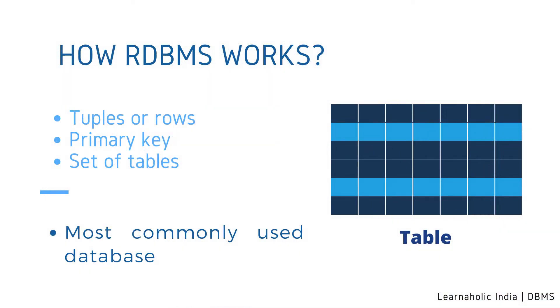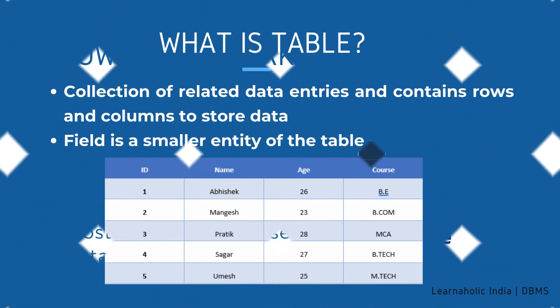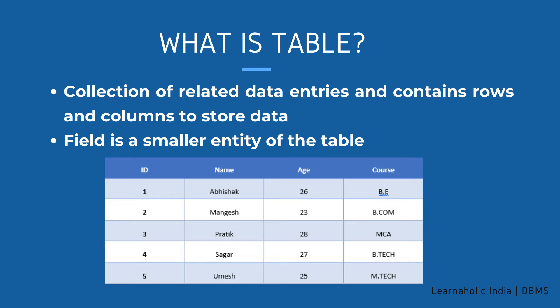Now let's see how RDBMS works. Data is represented in terms of tuples, or rows, in RDBMS. Relational database is the most commonly used database. It contains a number of tables and each table has its own primary key. Due to a collection of organized set of tables, data can be accessed easily in RDBMS. The RDBMS database uses tables to store data. A table is a collection of related data entries and contains rows and columns to store data.